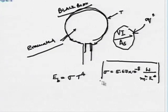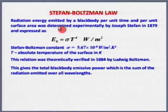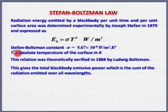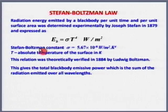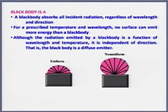A little later we will understand how we arrive at 5.67. For now we can take it as a relation given by Stefan-Boltzmann. This was first found empirically through experiments by Stefan, and Boltzmann derived it theoretically through Boltzmann statistics, confirming that σ = 5.67 × 10⁻⁸.